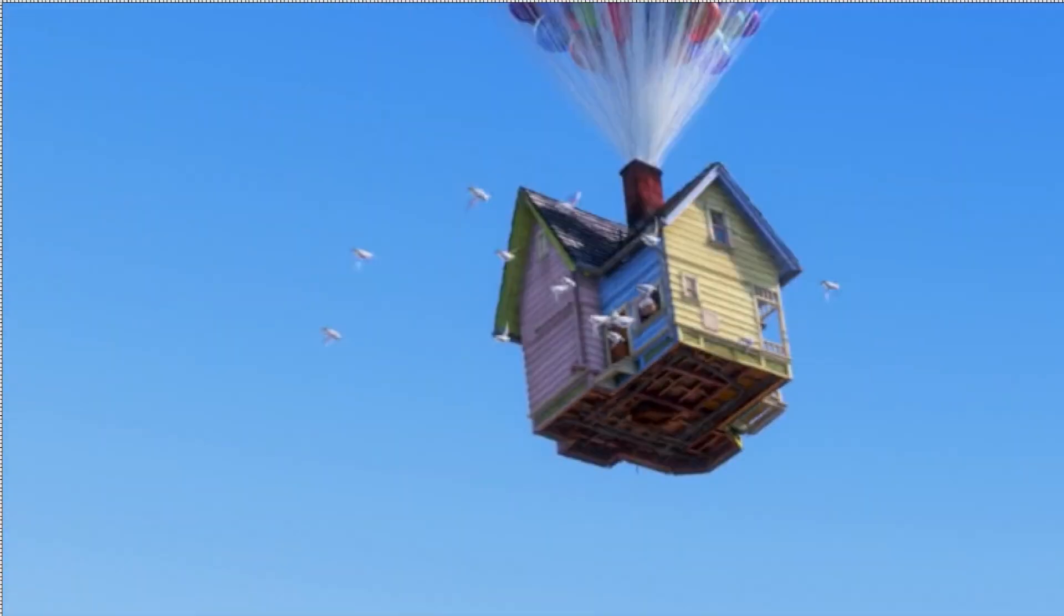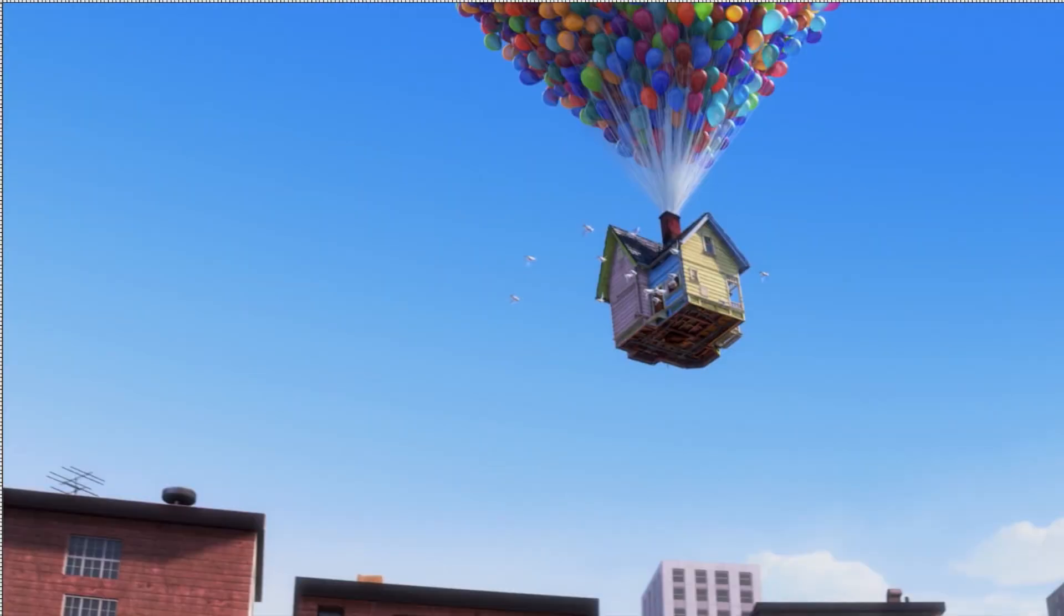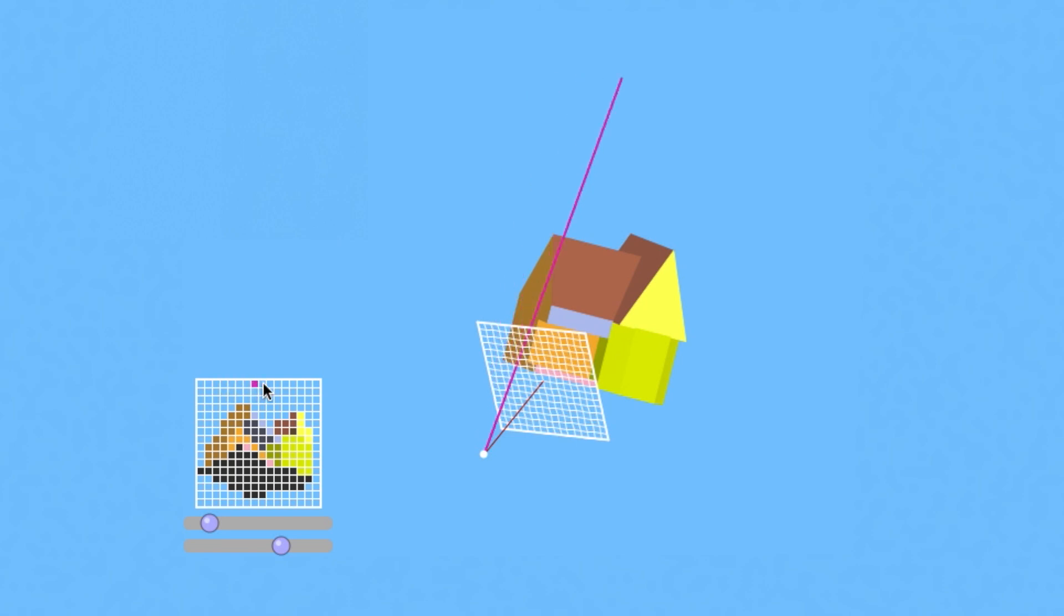In the previous video, we saw that the basic job of a ray tracer is to determine what color to paint each pixel. And it does that by casting a mathematical ray that starts at the camera, passes through a pixel, and then off into the scene.